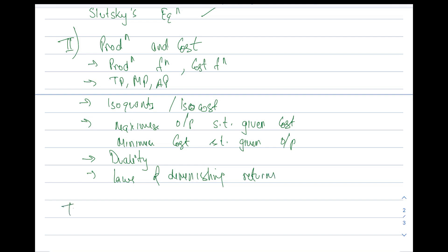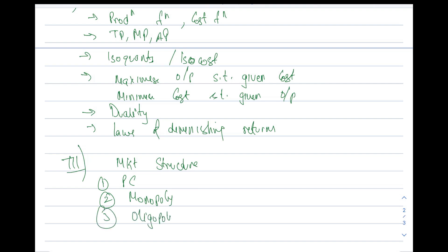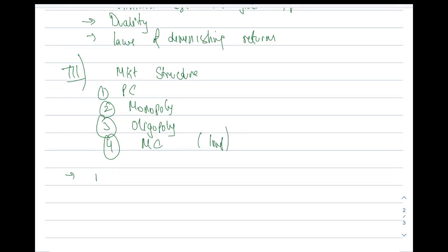After that we will go to the third unit, which will consist of market structures. There we will be covering perfect competition, monopoly, oligopoly, and monopolistic competition. For monopolistic competition we will cover only the important models. We will also cover the basics of game theory — not in too much detail, but only the basics which are usually tested in exams.